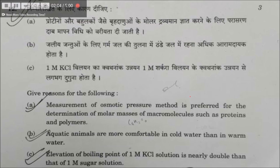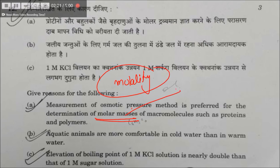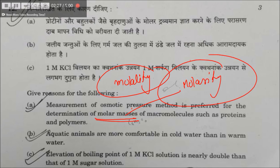Osmotic pressure is preferred for determination of molar masses for two reasons. First, we can use molarity instead of molality since it is measured at room temperature, so molarity is unaffected. Second, the deviation values for osmotic pressure are large and measurable, unlike elevation in boiling point or depression in freezing point, which give very small readings.